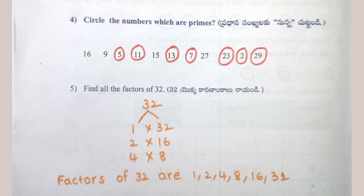Circle the numbers which are prime: 5, 11, 13, 7, 23, 2, 29. Find all the factors of 32: 1×32, 2×16, 4×8. Factors of 32 are 1, 2, 4, 8, 16, 32.